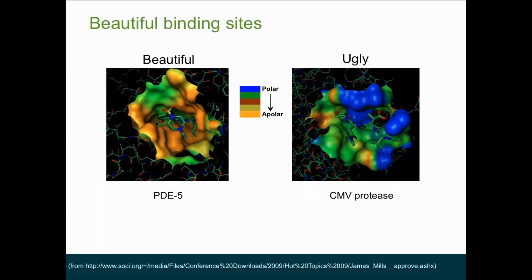This slide shows two proteins with different binding sites. The binding site on the left in phosphodiesterase-5 could be considered a beautiful binding site, whereas CMV protease on the right has a much larger, more exposed polar binding site, making it much harder to find good drug-like ligands for this kind of target.